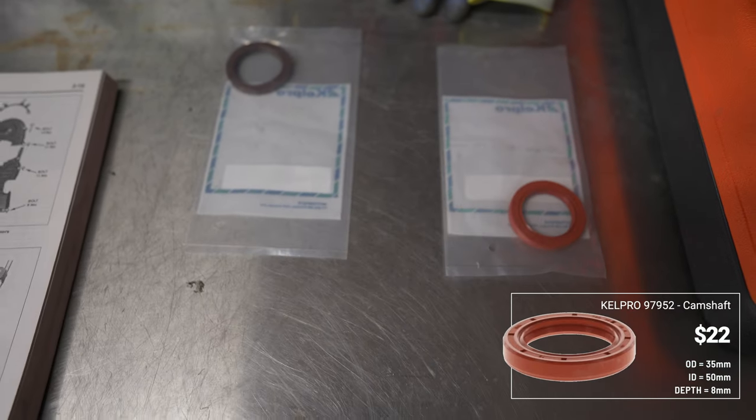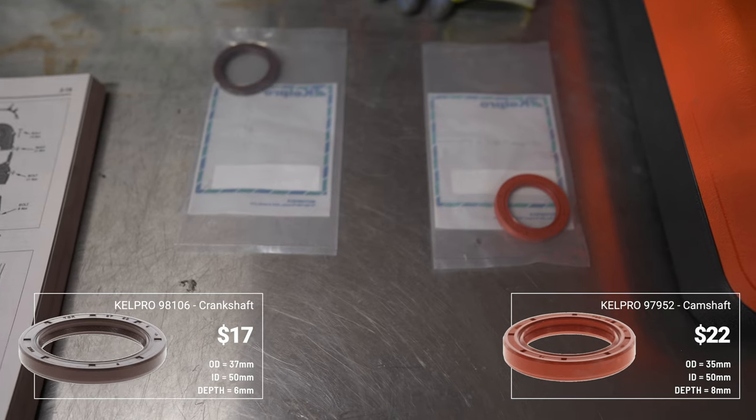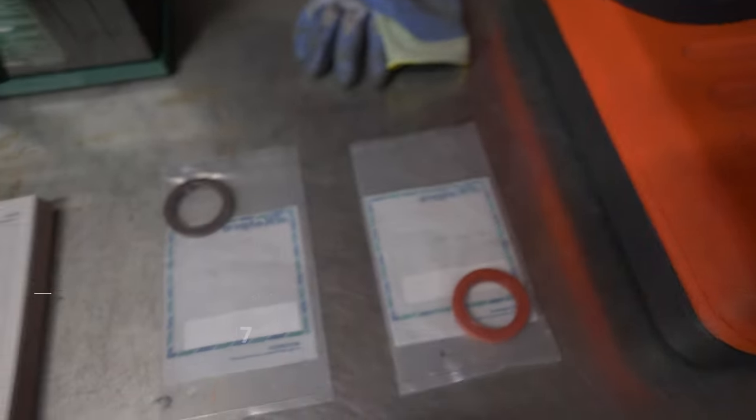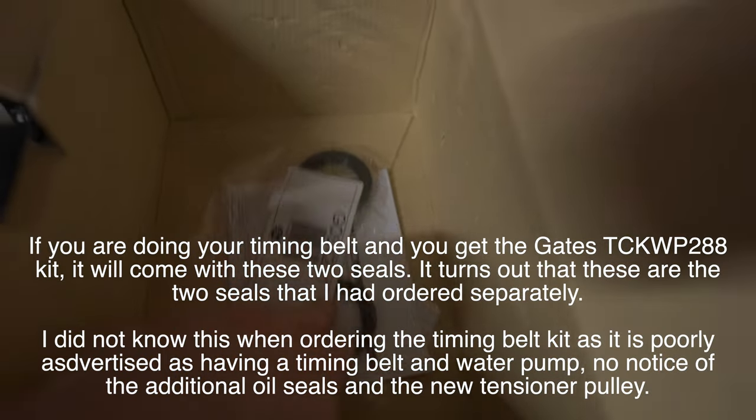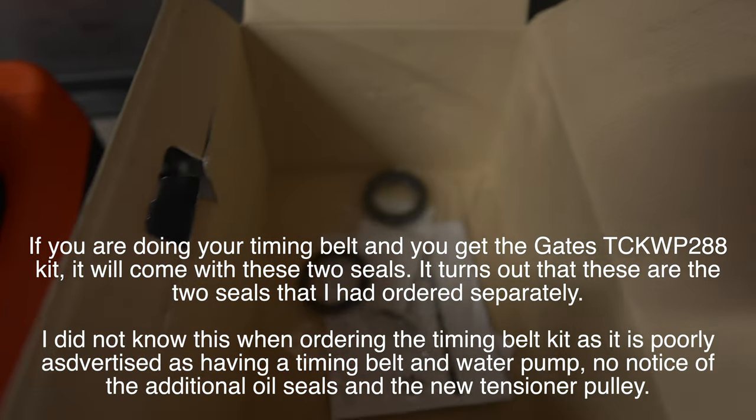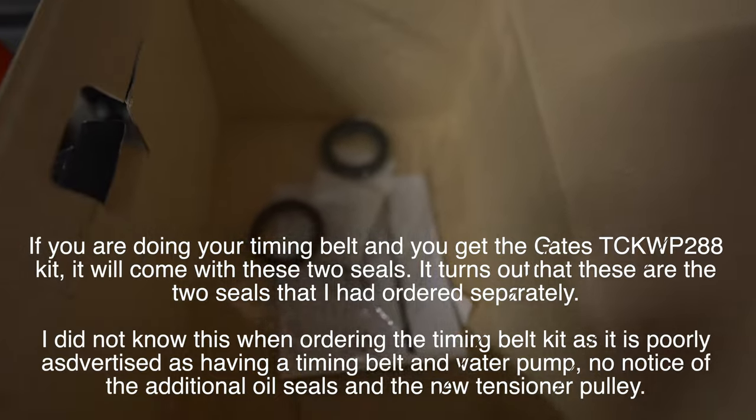Here we've got the crankshaft and camshaft oil seals. I will put the correct part numbers down in the description. I can't remember which is which at the moment, but I'll figure it out before I install them. And it also came with these, which appear to be seals of some sort. I don't know where they go yet, but hopefully I'll figure it out as I go.